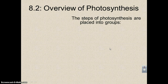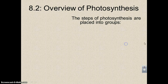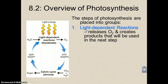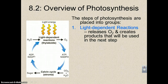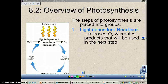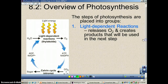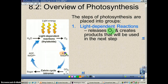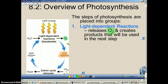What are the steps of photosynthesis? It's divided into two groups. The first one is called the light-dependent reaction — this one means it has to use light. In the light-dependent reactions, you're going to give off oxygen as the waste product, and you're going to create two things: ATP and NADPH, that will move on. Here's your waste product.